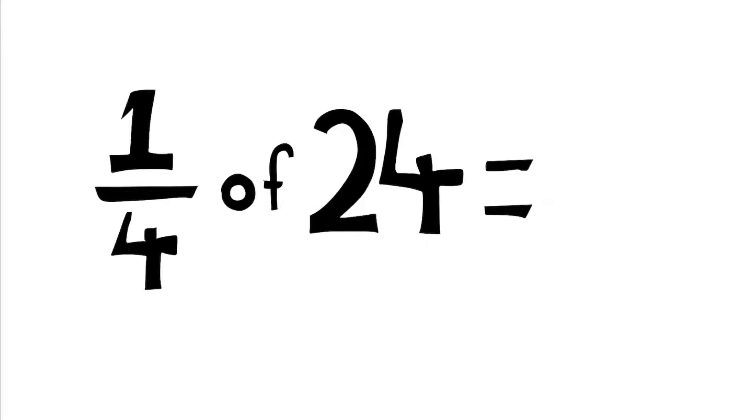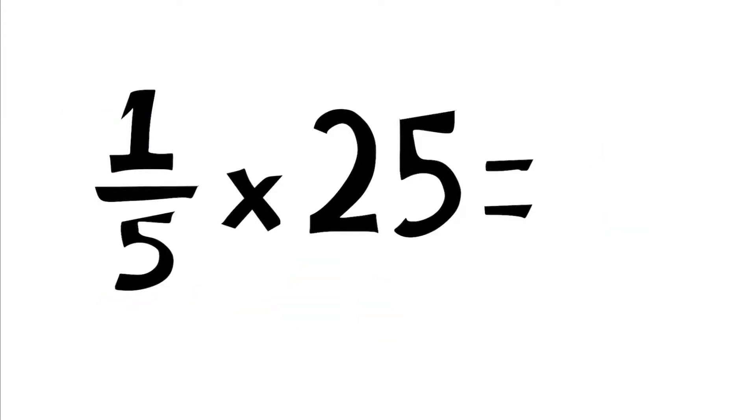Here we have a look at a quarter of 24. How many fours go into 24? Six. Multiply that by the numerator: six times one is six. A quarter of 24 is six.